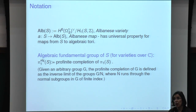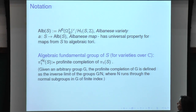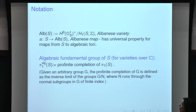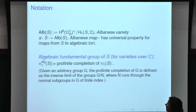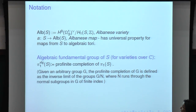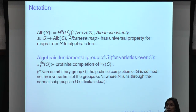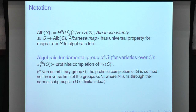An important invariant is the dimension of the image of the Albanese map. If omega-1 has no global sections, the Albanese variety is trivial. Otherwise, the image of this map may be a curve or a surface. If it is a curve, it will be a curve of genus equal to the dimension of H⁰(omega-1).